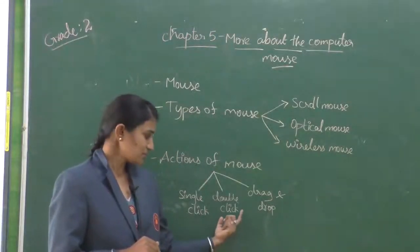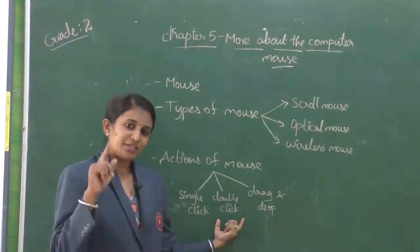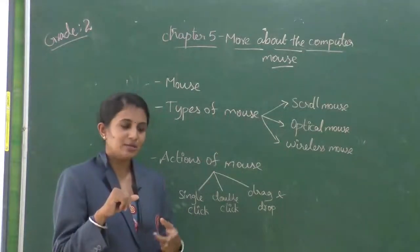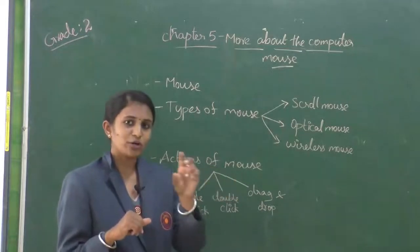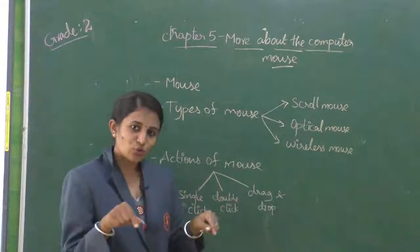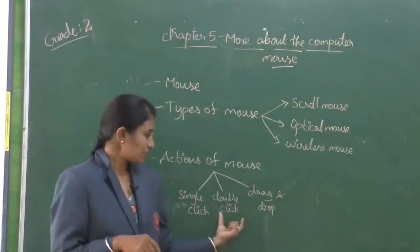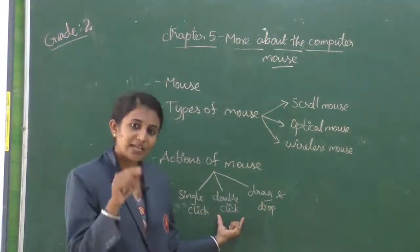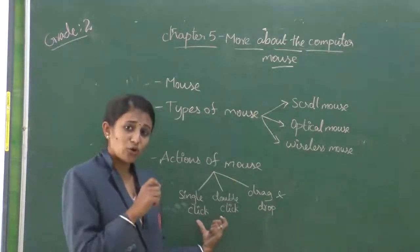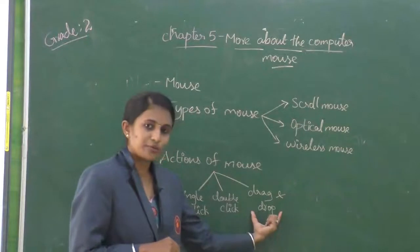Next thing is double click. For double click, we need to use the pointing finger only. We need to double click the left mouse button by selecting the file or picture, and automatically what happens? The file gets open. If we double click, the file or image gets open. In single click, it gets selected.